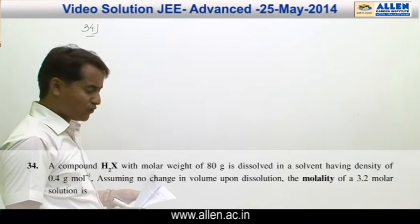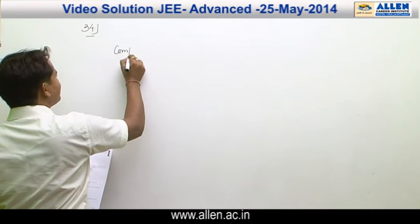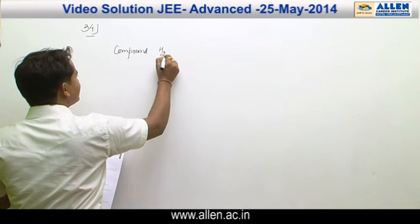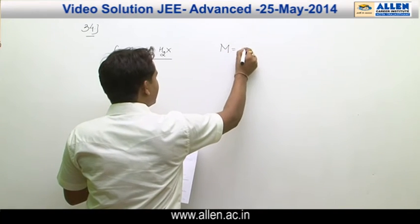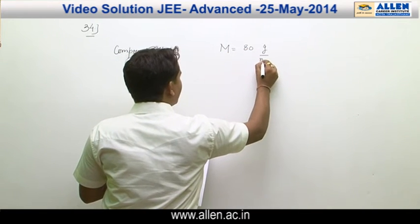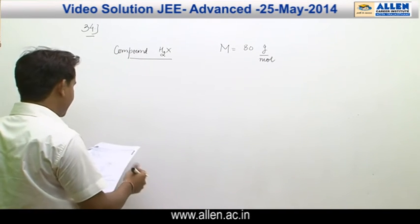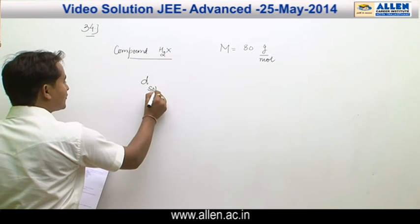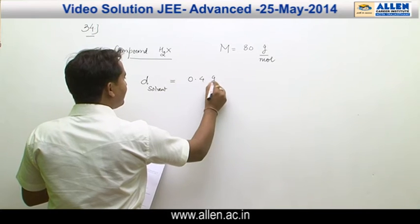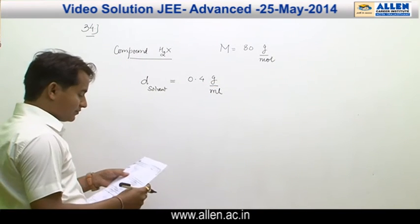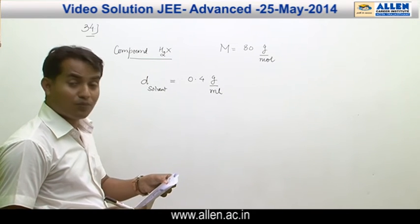Question number 34. A compound H₂X is given. Its molecular weight is 80 gram per mole. It is dissolved in a solvent having density, that means density of solvent is given, which is equal to 0.4 gram per ml. And in this question, it is given that no change in volume upon dissolution.